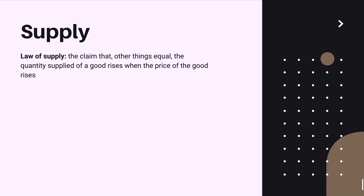Now let us discuss the other market force: supply. While demand is on the buyer's side, supply is on the supplier's side — companies and businesses. As with demand, we have a law of supply, which states that, other things equal, the quantity supplied of a good rises when the price of the good rises. The logic here is that higher prices increase the willingness of suppliers to produce and sell more.